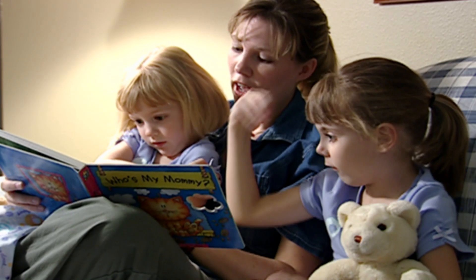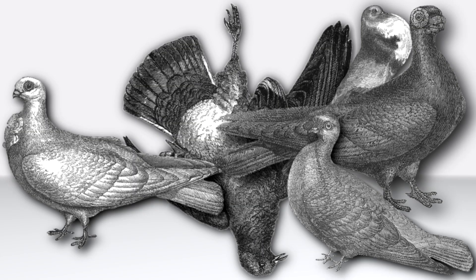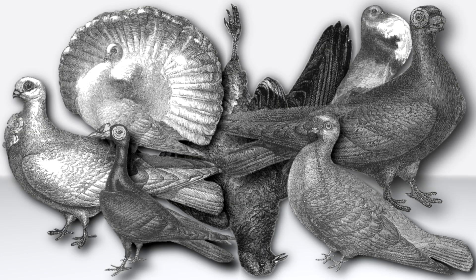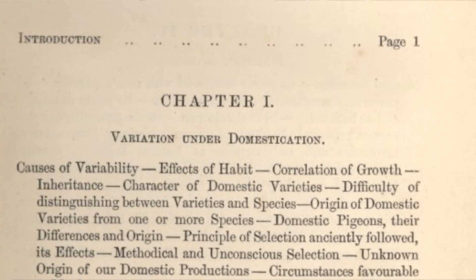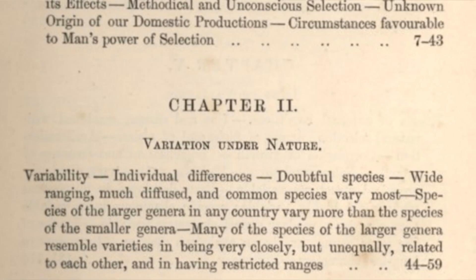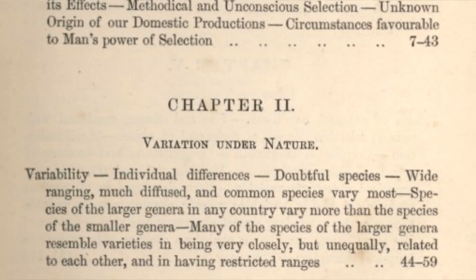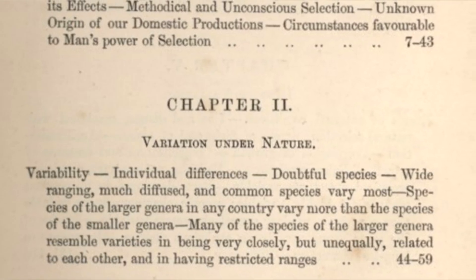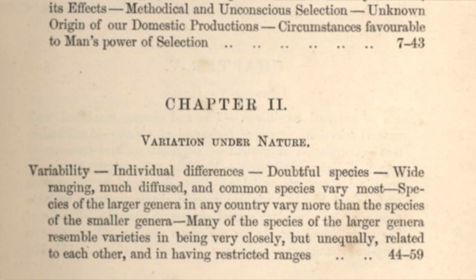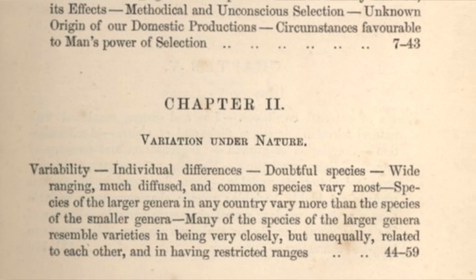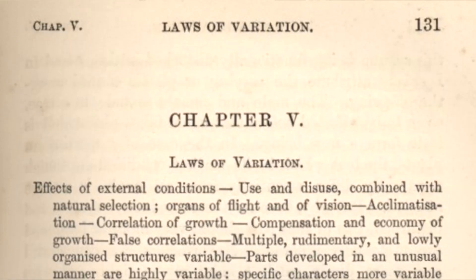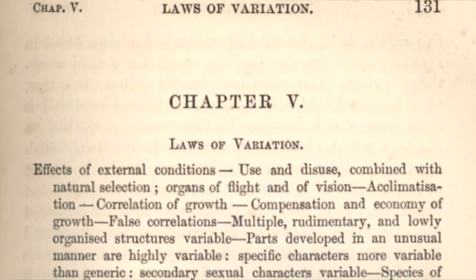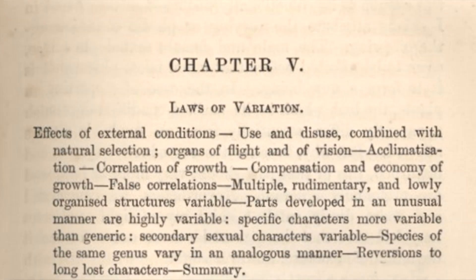Trust me, if you read On the Origin, you will be sick of pigeons and convinced that Darwin is right about variation by the time you finish chapter one, variation under domestication, and you'll groan when you turn the page and see that chapter two is variation under nature.